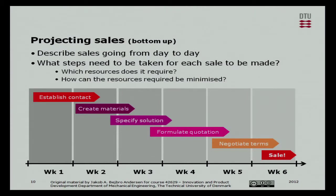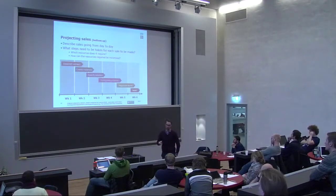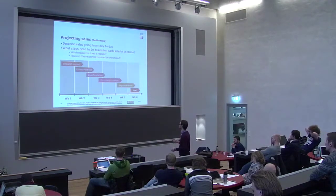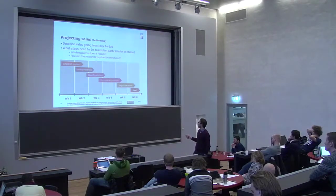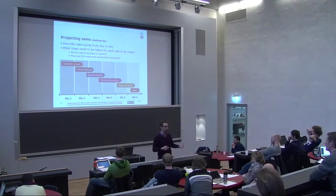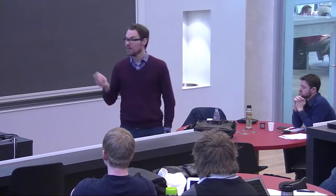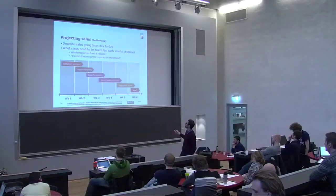One way of figuring out how the sales process works is asking: what steps do we need to go through to actually sell our product? Here's an example based on a technology sale — selling a wind turbine. First I need to establish contact and create sales materials. If that works, I get into dialogue with the customer, specify a solution, then formulate a quotation covering cost and what's in the package. Finally we negotiate terms — maybe with the procurement department — and hopefully at the end we have a sale.